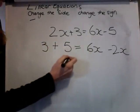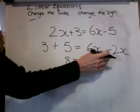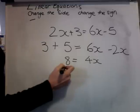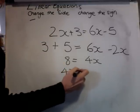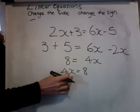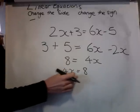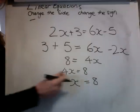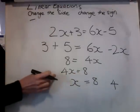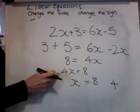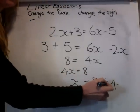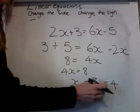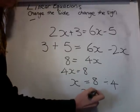So now we have 8 equals 6X minus 2X, which is 4X. And at this point you can just switch them around. It doesn't matter. So here we have 4X equals 8. I want X on this side, numbers on that side. Change the side, change the sign. It was times 4, now it will be divided by 4. X equals 8 divided by 4. X equals 2.